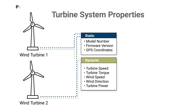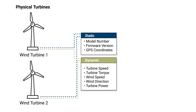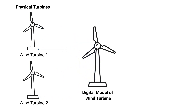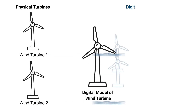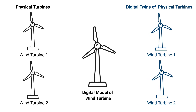To build a digital twin for a wind turbine system, you need to first create a digital model — a data structure that represents both the static and dynamic properties of the real physical wind turbine in an abstract manner. As both wind turbine 1 and wind turbine 2 are of the same type, you would then use the same resulting digital model to create concrete representations of them and start updating their properties with real sensor data from their physical counterparts.